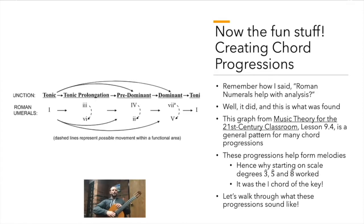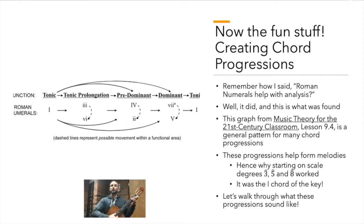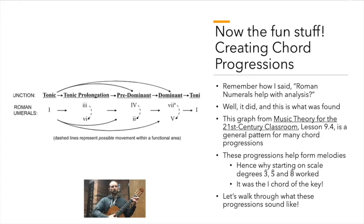This helps explain why when we were starting on 3, 5, and 8, the melodies worked — they were the tonic chord, or I, in terms of Roman numerals. So let's see what this sounds like. If I'm starting on I in C, I could go to VI, then to IV, then to V, then back to I. Or I could go from I to V back to I. Or I could go I to III, to VI, to IV, to II, to VII diminished, to V, back to I.